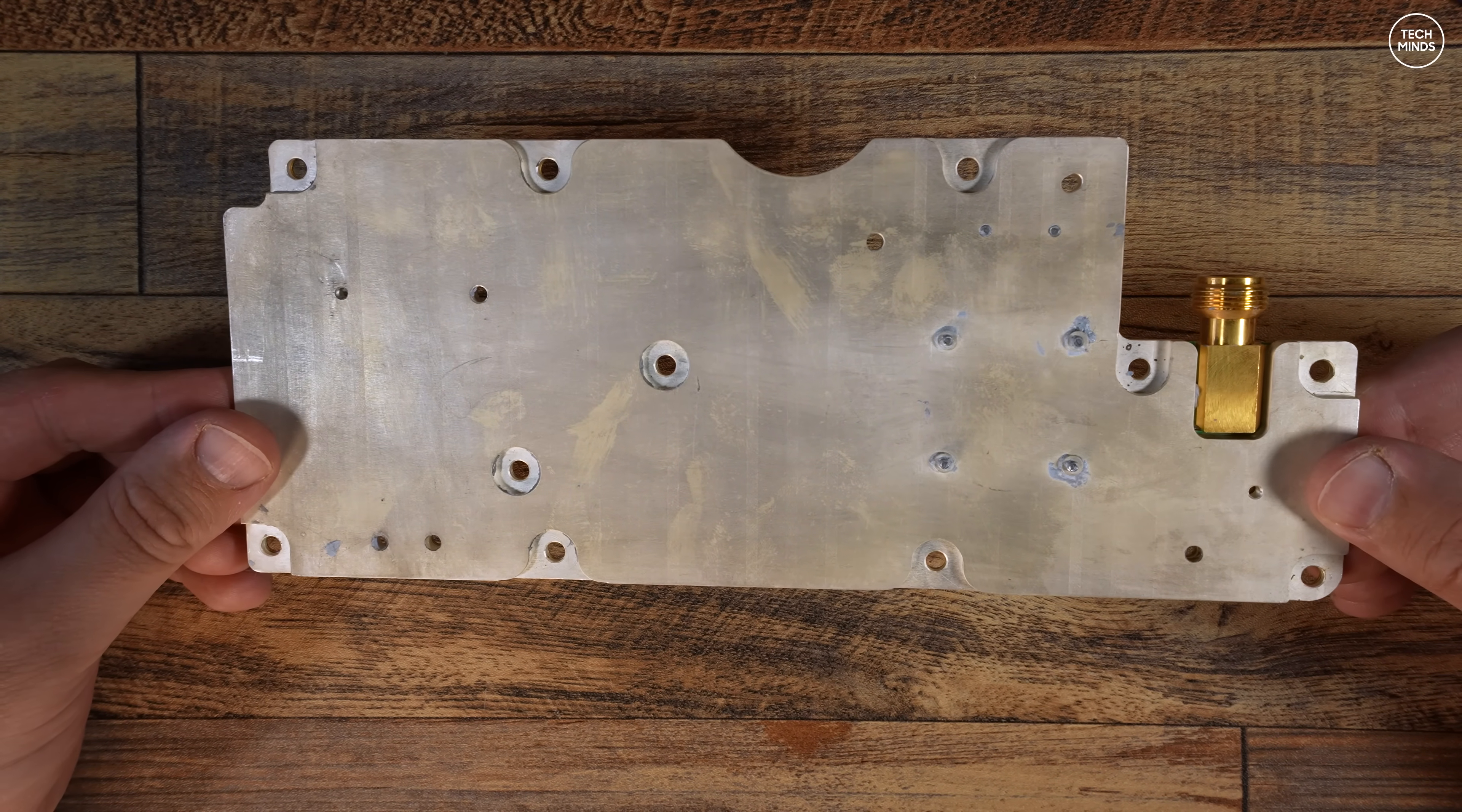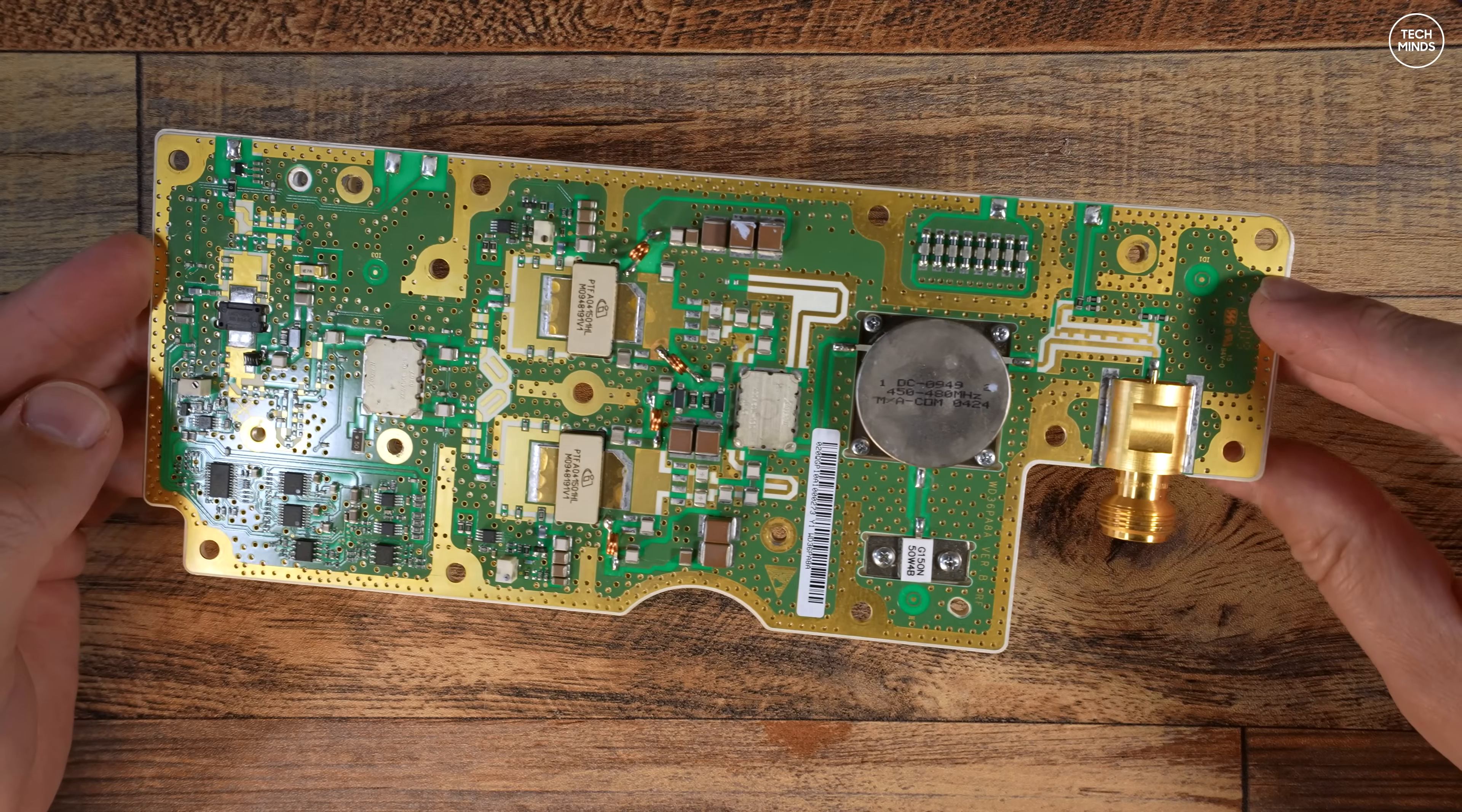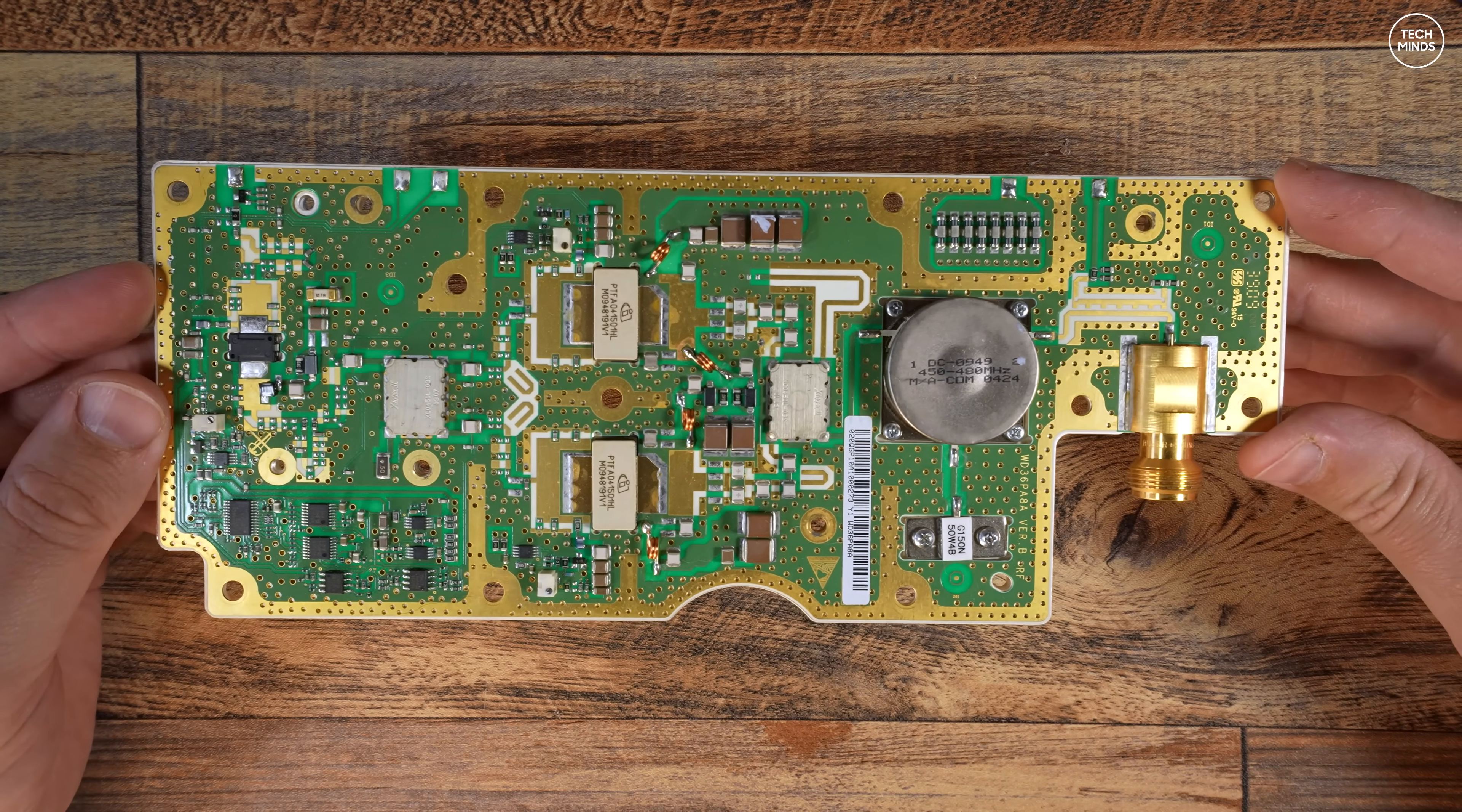I believe this is rated at around 250 watts with just 100 milliwatt input. However, this pallet will need some modifications and mounted onto a large heatsink before it can be used on the 70cm ham band as I plan to do.